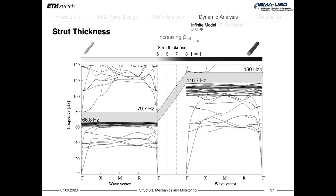On the contrary, when we increase the thickness of the struts from 5 mm to 8 mm, and increase also the relative density, the band gap moves towards higher frequencies. This happens because the struts become stiffer and the natural frequency increases.